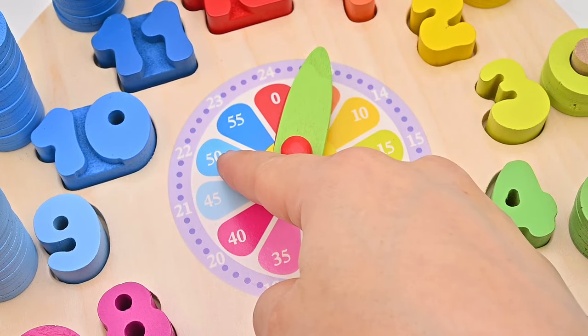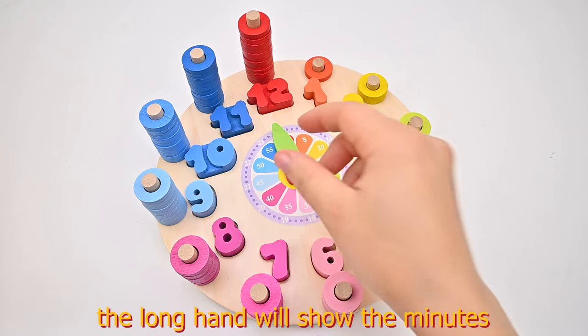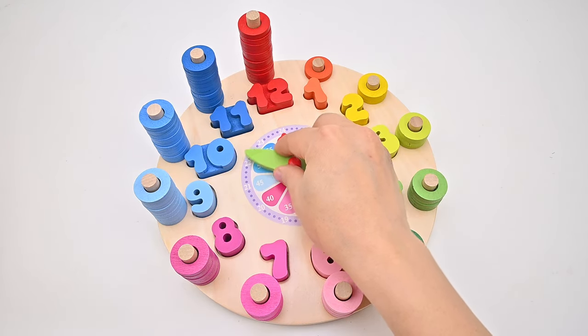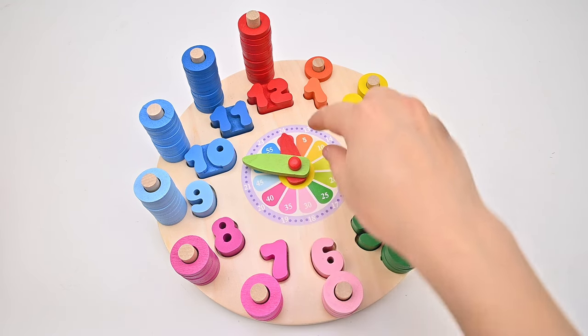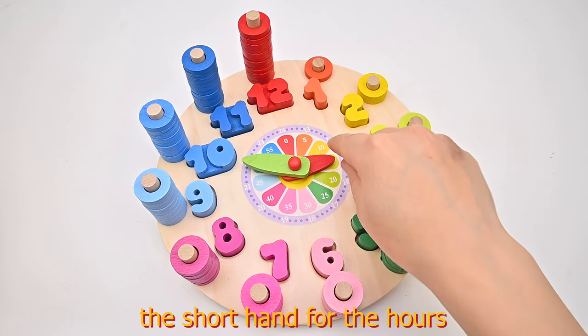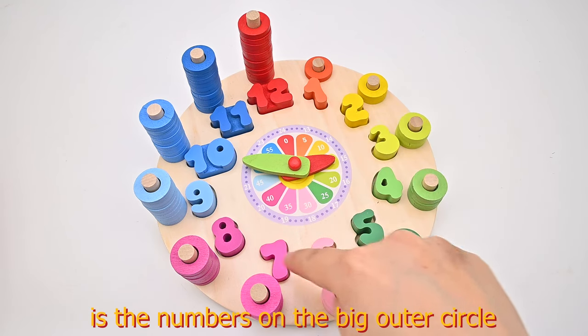The long hand will show the minutes. Those are the numbers on the small inner circle. The short hand for the hours is the numbers on the big outer circle.